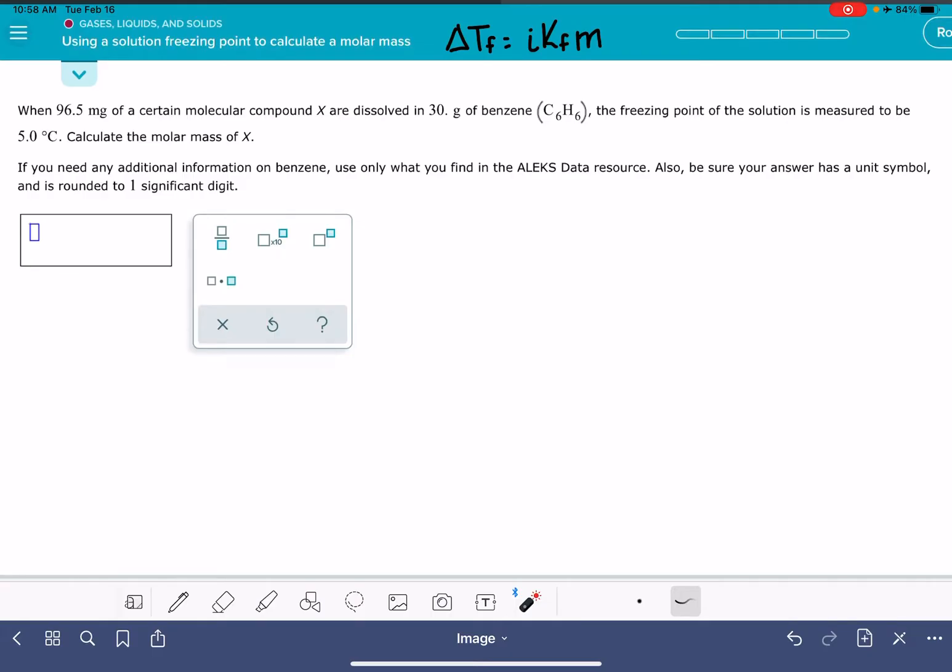Let's see what kind of information is given to us in the problem. 96.5 milligrams of a certain molecular compound - a molecular compound means that it is a non-electrolyte, so I equals 1. Ionic compounds are the ones that have I values that are 2 or 3 or whatever. If it's a molecular compound, that means it's a non-electrolyte, which means I equals 1. It's dissolved in 30 grams of benzene, and the freezing point of the solution is 5 degrees Celsius.